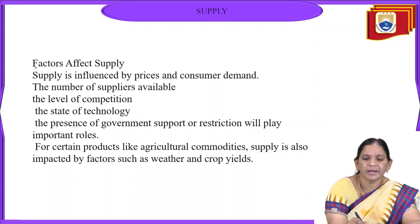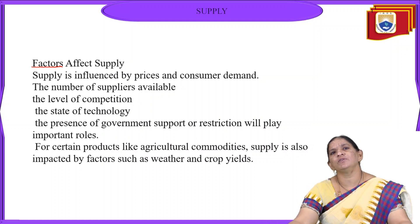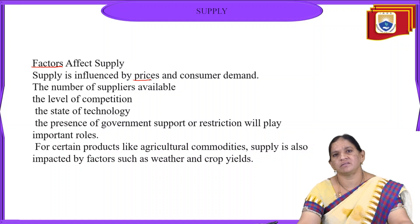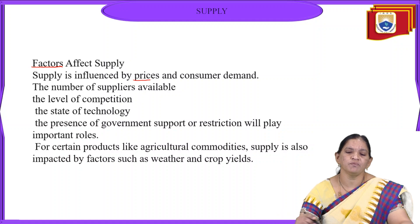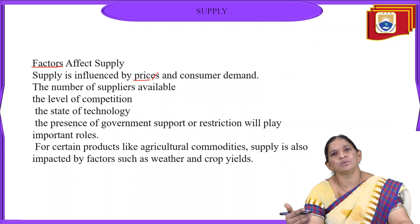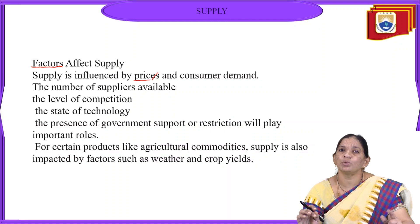Now we will look at the factors affecting supply. Supply is influenced by price and consumer demand. The producer or supplier is motivated when the price of goods demanded is higher. When there is an increase in price, the motivation to earn more profit starts, and the producer tries to supply more goods into the market. Price is one of the important factors affecting supply of any product.